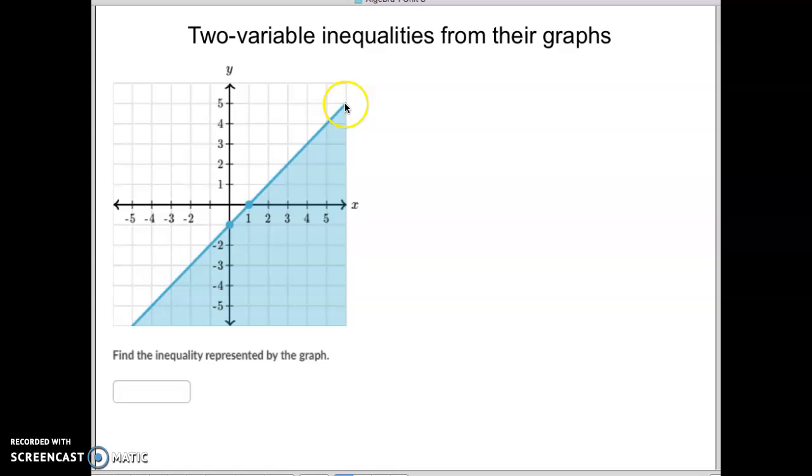So in this one, notice that it has a solid dark blue line right there. Because it's a solid dark blue line, it gets an equal sign. It's as easy as that.